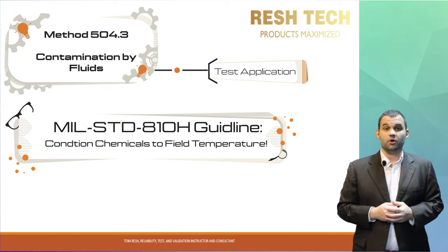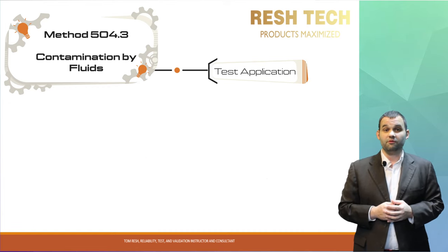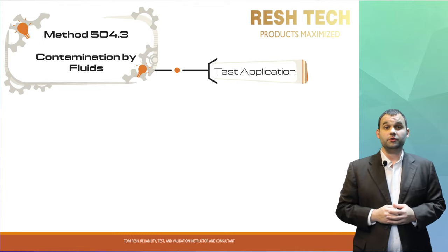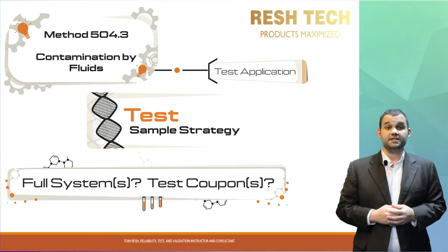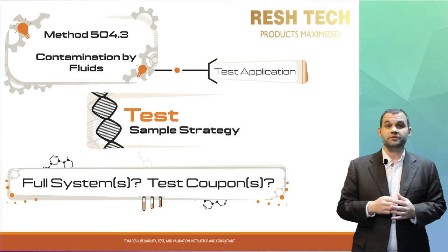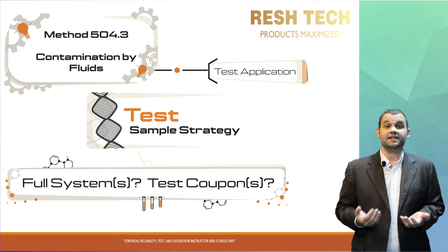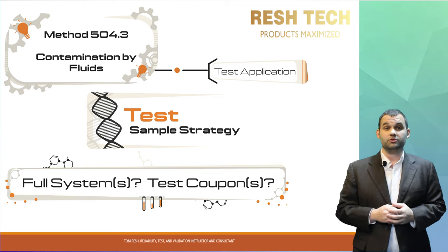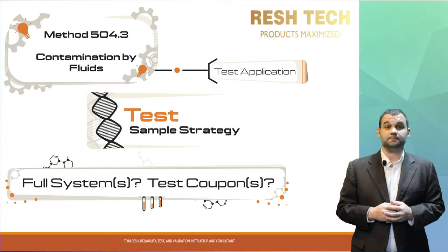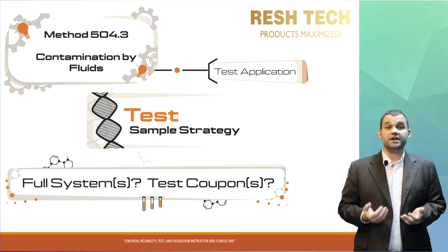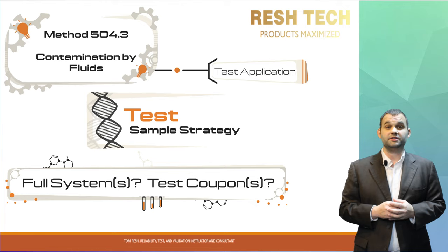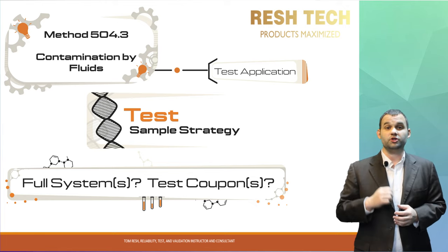You may also look at going to temperatures above the system's mission profile for a qualification test or a worst-case mission profile study. You also need to think about how you will test each chemical — will you use a separate system or material coupon for each test, or test each chemical on the same system or coupon in succession? If reusing the same part, take care to ensure you have a method that allows you to discern which chemicals cause degradation. If you clean the system between each chemical test, make sure you use a chemical that will not cause further damage or prevent learning about your system's material susceptibility.